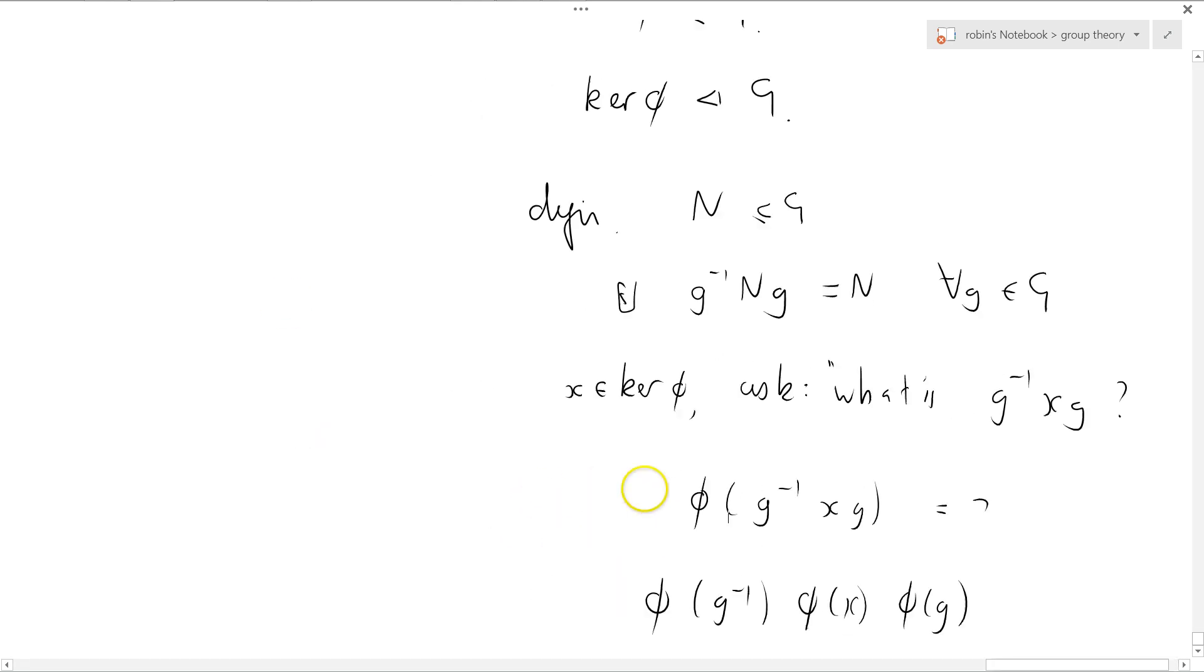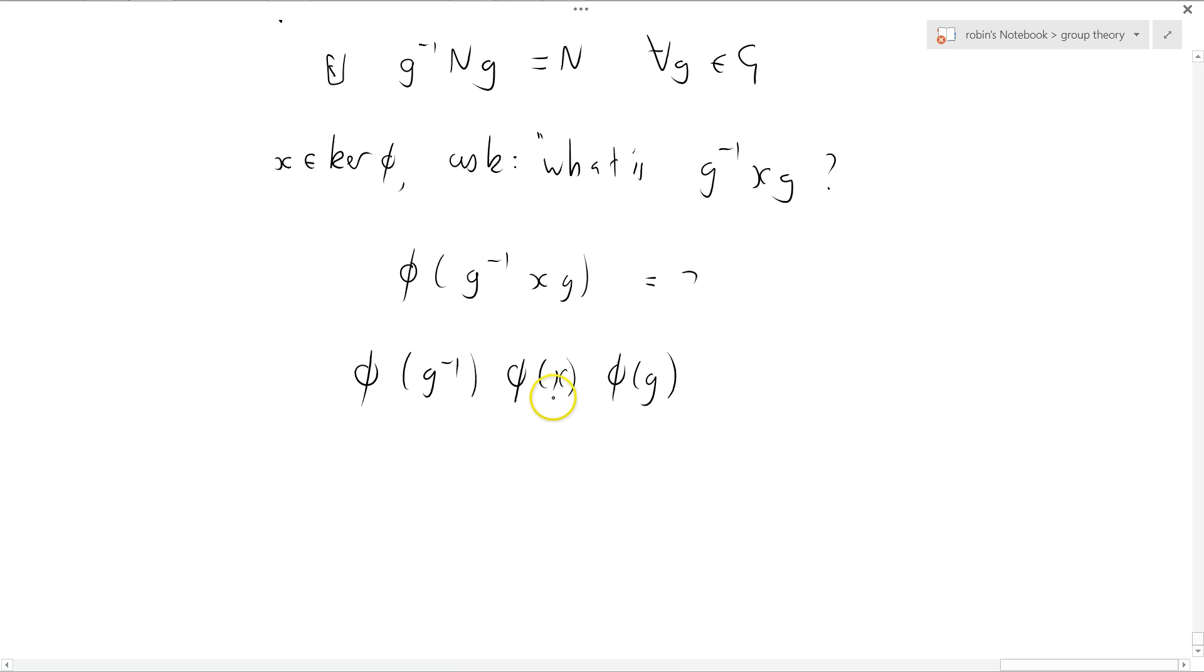And now the crucial thing, the crucial observation that you make, is that X is in the kernel of phi, we know that phi of X equals the identity.